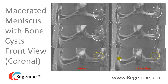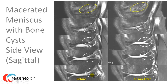A macerated meniscus with bone cysts shows what happens long-term when a meniscus is not there — the bone will actually die off, forming these little cysts. On the before images, you can see a very nasty-looking meniscus that barely resembles one, compared to the normal dark triangle on the other side. After stem cell treatment, the meniscus has some form to it — not normal by any stretch, but improved. The bone cyst went from large to much, much less. From the sagittal view, the macerated meniscus looks almost like an untamed dragon, but after stem cell treatment it has much better form and the bone cysts go away.